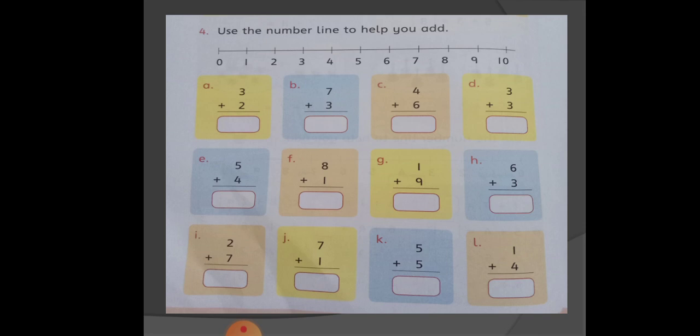Dear students, number line is used to help you add. Now students, we will add 2 digits. Let's start from A part. 3 plus 2 makes 5. Write 5 in the box below. Then in the second part, as we have 7 plus 3, so the answer will come 7 plus 3 is equal to 10.